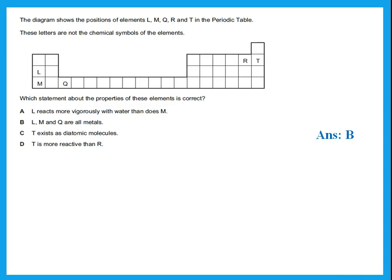So let's take a look at C and D. C says T exists as a diatomic molecule. Remember that we said group 8 are monatomic, not diatomic. The molecule is made up of one atom, not two. The one that is diatomic would be R, group 7 are diatomic. T is more reactive than R? No, of course not. T is group 0. Noble gases, they're not reactive at all.